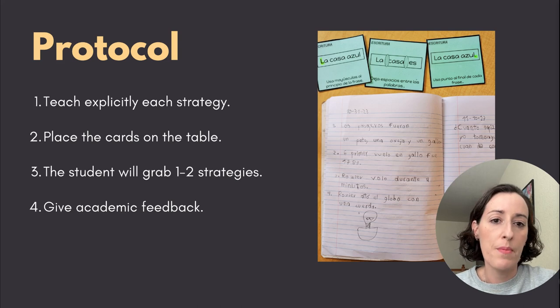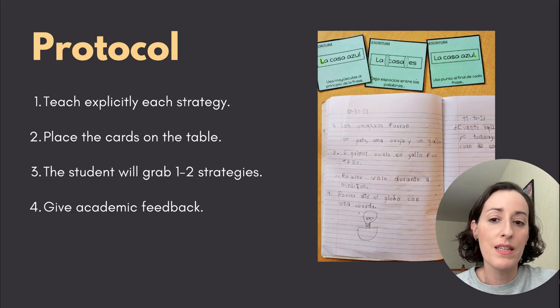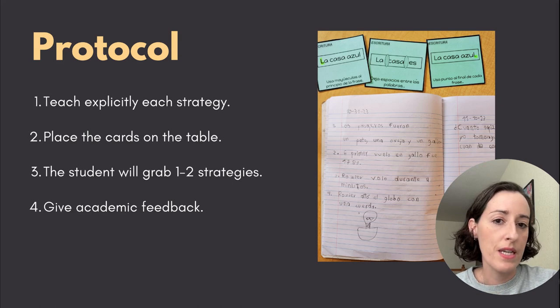So while they're doing their independent work, just place the strategies on the table. And the third step would be the students will start to use them independently. You can also assign strategies depending on the skill that they need to master. This is a picture of one of my students where he was doing a writing task. These were the three strategies that he was supposed to apply. So the first one was capital letter at the beginning of the sentence, leaving a space between the words, and finally a period.